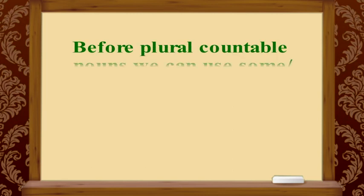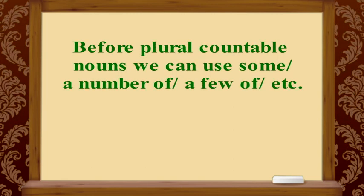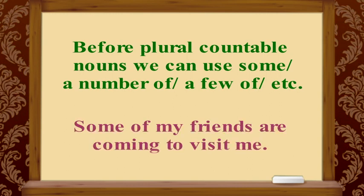Before plural countable nouns, we can use some, a number of, a few of, and others. Example: some of my friends are coming to visit me.